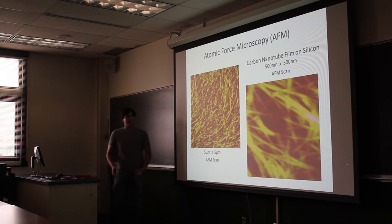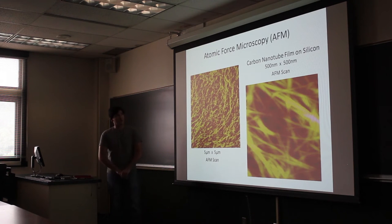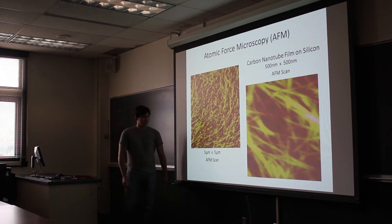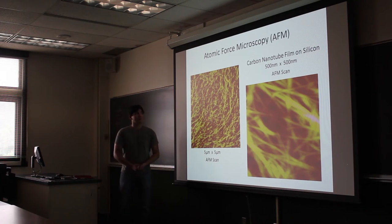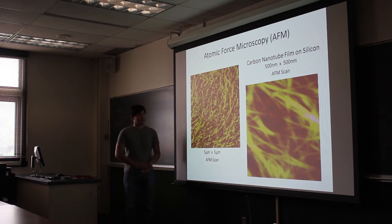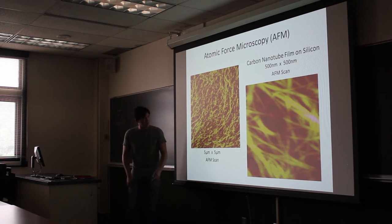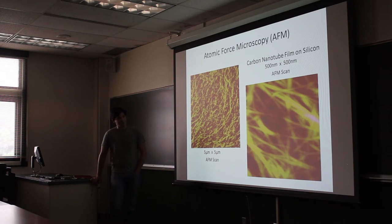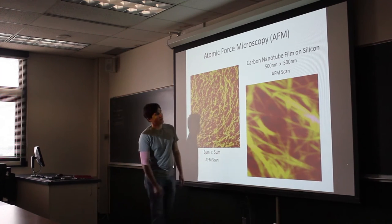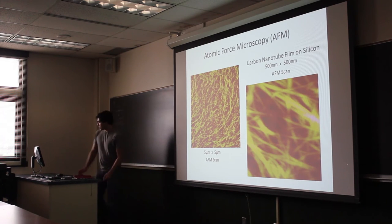In order to understand what's going on, we do atomic force microscopy, which is a form of scanning probe microscope. For my first couple weeks, I got good at using AFM. This is a 5 micron by 5 micron scan image of a carbon nanotube film on silicon. So it's really flat. Each of these spiderweb-y kind of lines are bundles of nanotubes or individual nanotubes. This is our 500 nanometer scan, and we believe that's a single nanotube.